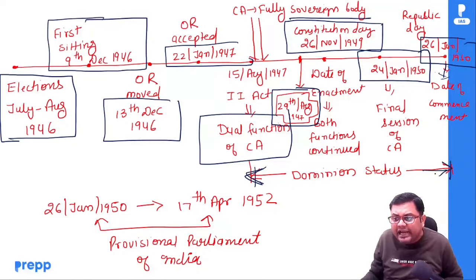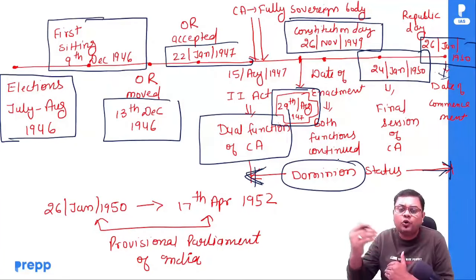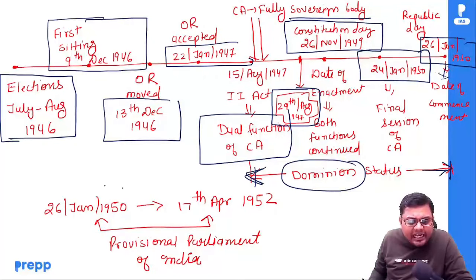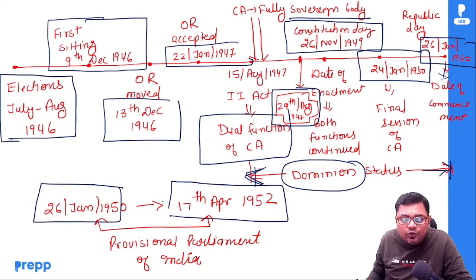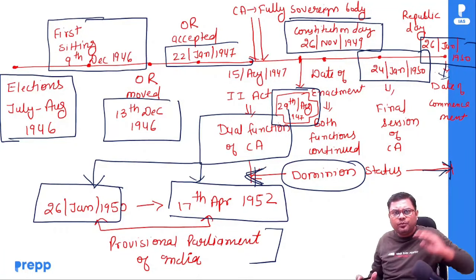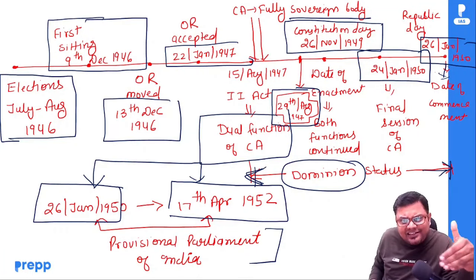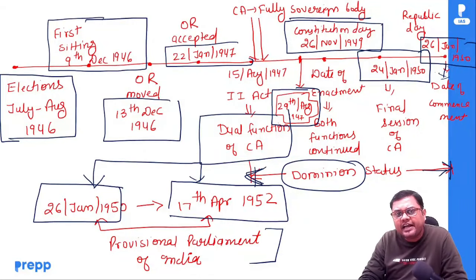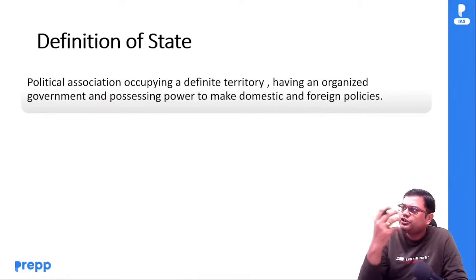15th August 1947 से 26th January 1950 तक India का status Dominion था। उसके बाद Republic हो जाता है। From 26th January 1950 to 17th April 1952 — इस time period में assembly worked as provisional parliament of India। यह summary slide से अच्छे से revise कर लोगे। हमने देख लिया: what is constitution, उसके functions, assembly किस तरह से बनी, क्या उसके functions थे। अब हम कुछ important terms पर आते हैं जिन पे UPSC question पूछ चुकी है।